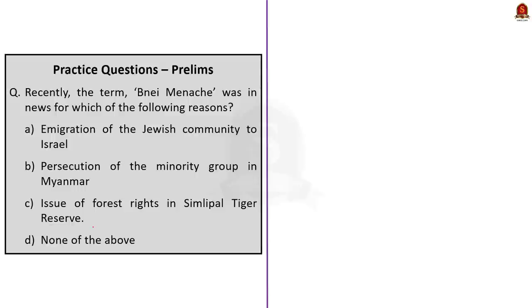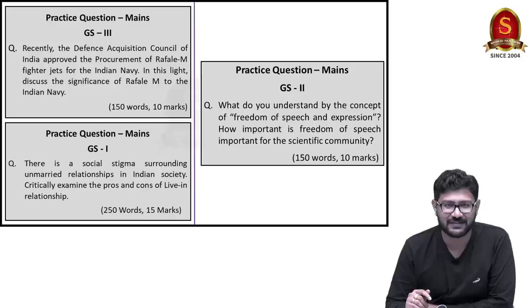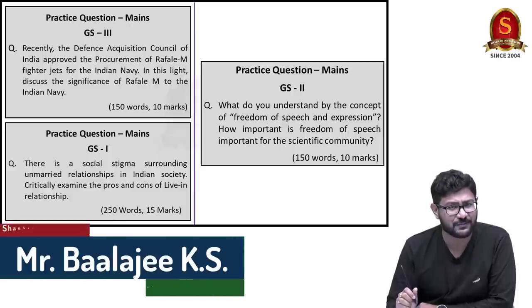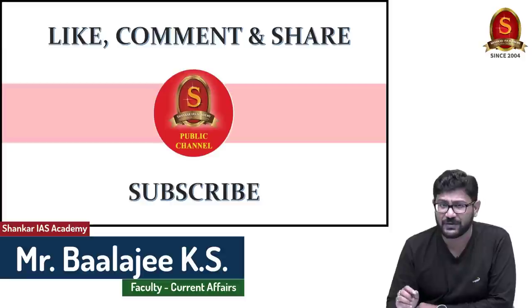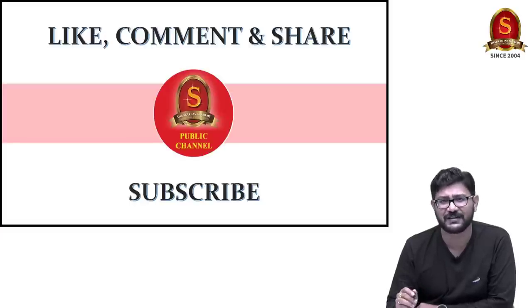The third question asks for which reason the term Bnei Menashe was recently in news. From our discussion, the correct answer is option A: emigration of the Jewish community to the state of Israel. The last question is a quiz question for aspirants to answer in the comments section. The main questions based on today's discussion are also displayed for aspirants to write and post their answers in the comments. If you like today's discussion, like, comment and share it with your friends. For more updates regarding UPSC preparation, subscribe to Shankar IAS Academy's YouTube channel. Thank you for listening.